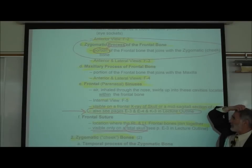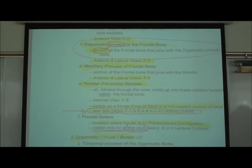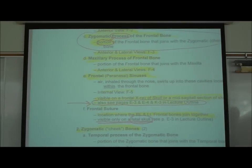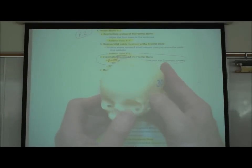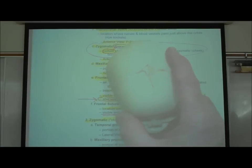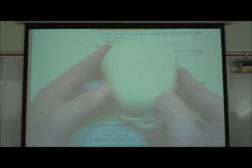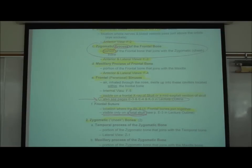The last thing listed for the frontal bone is the frontal suture — the location where the right and left frontal bones join together. It's visible only on a fetal skull. If you look at a fetal skull you can actually see the right and a left frontal bone. These right and left frontal bones join together so tightly that the suture line disappears as we get older. There are also soft spots on the fetal skull.